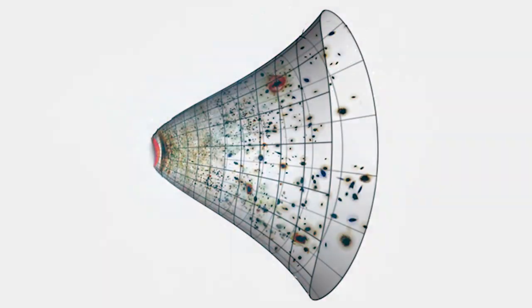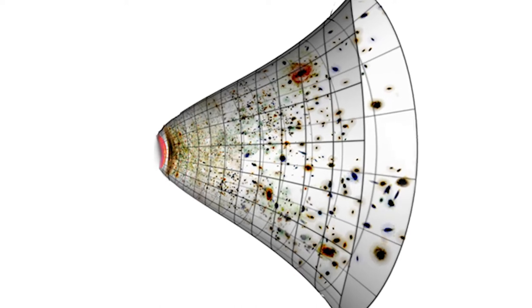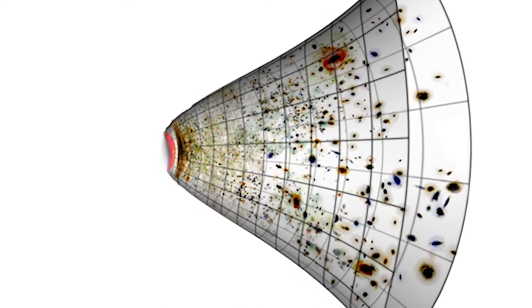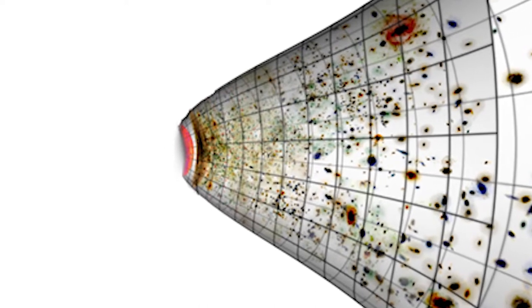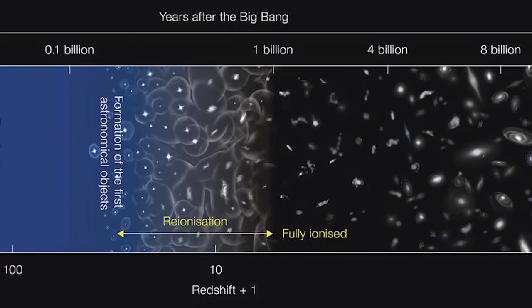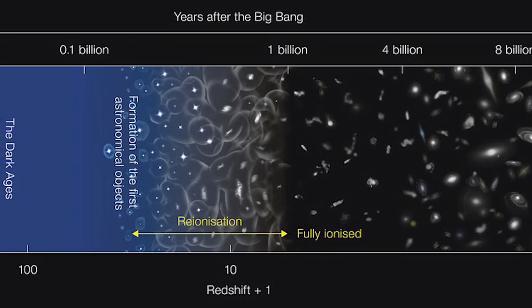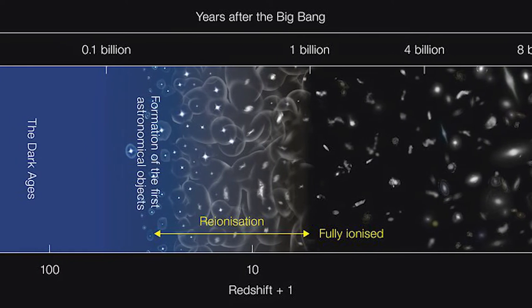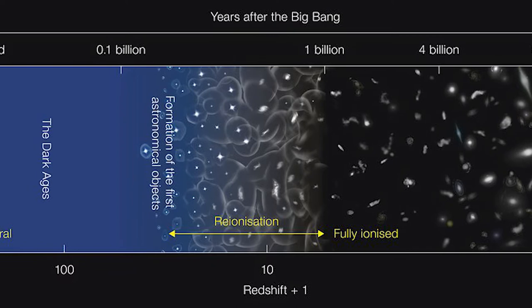If the universe is expanding, this means that as time goes by, it becomes bigger, less dense, and colder. This means that in the past, the universe must have been smaller, denser, and hotter. And the further in the past we go, the smaller, the denser, the hotter the universe must have been. If we keep turning the clock back, at some point in its past, the universe must have been so dense, so hot, that all matter in it was ionized.